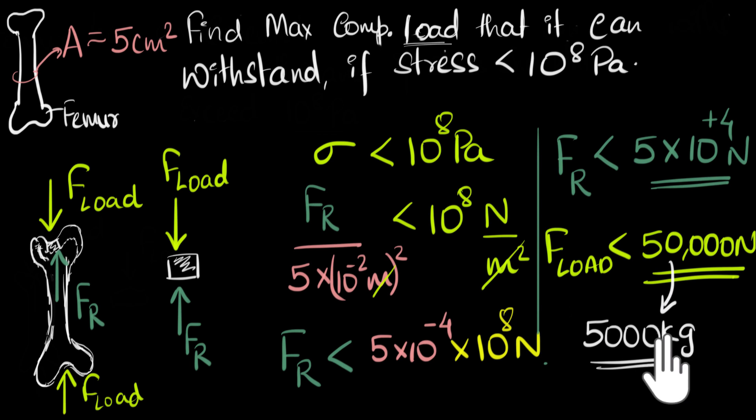So let's be safe. Let's go 10 times smaller. Your bone can withstand at least 500 kilograms. And that's one single bone. That means two bones together can withstand about 1,000 kilograms.